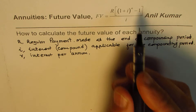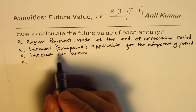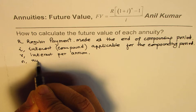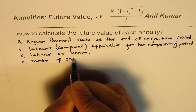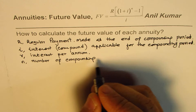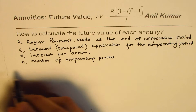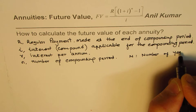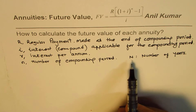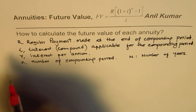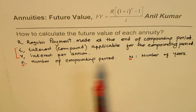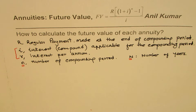n is the number of compounding terms or compounding periods. Normally you are given capital N, which is the number of years, not the number of compounding periods. So these are related terms. When applying this formula we have to understand this distinction, which is very important. Based on this, I'll take some examples and do the calculation.